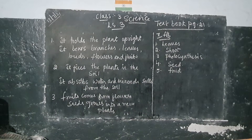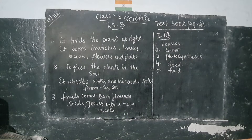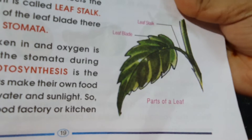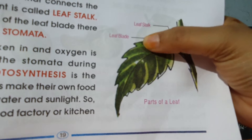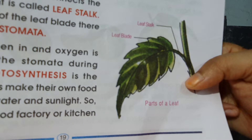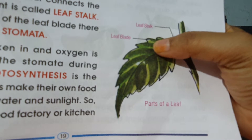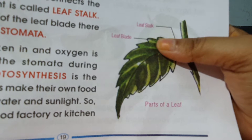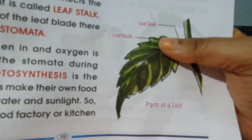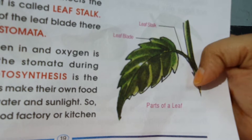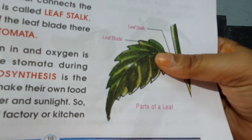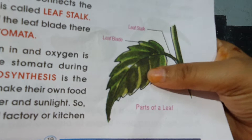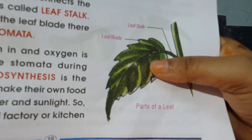Now, coming to the leaves. Leaves have stomata. At the leaf blade, there are small pores called stomata. Stomata take in carbon dioxide and release oxygen. This process happens during photosynthesis. Photosynthesis is a process where water, air, and sunlight are taken in by the leaves to make food.